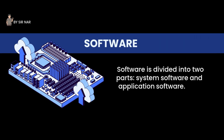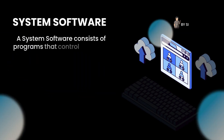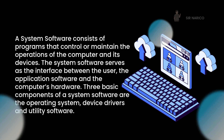Software is divided into two parts: system software and application software. System software consists of programs that control or maintain the operations of the computer and its devices. It serves as the interface between the user, the application software, and the computer's hardware. The three basic components of system software are the operating system, device drivers, and utility software.